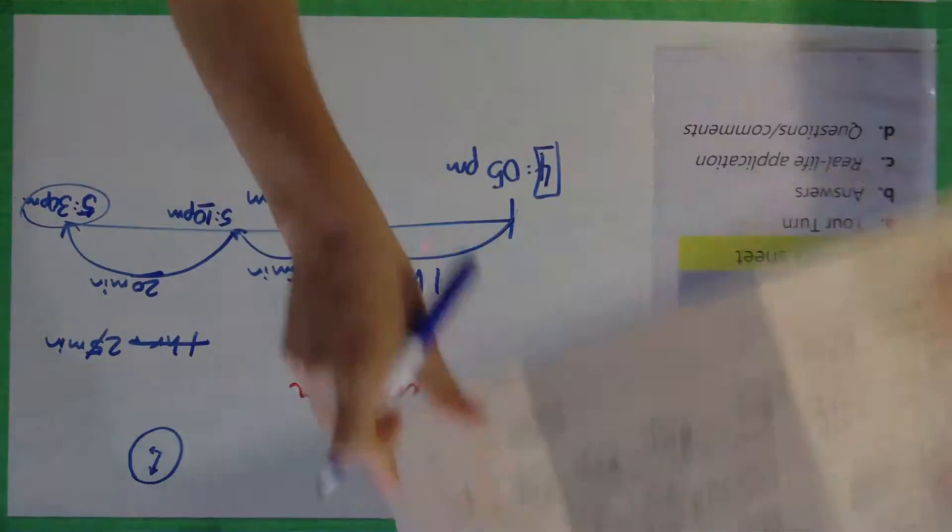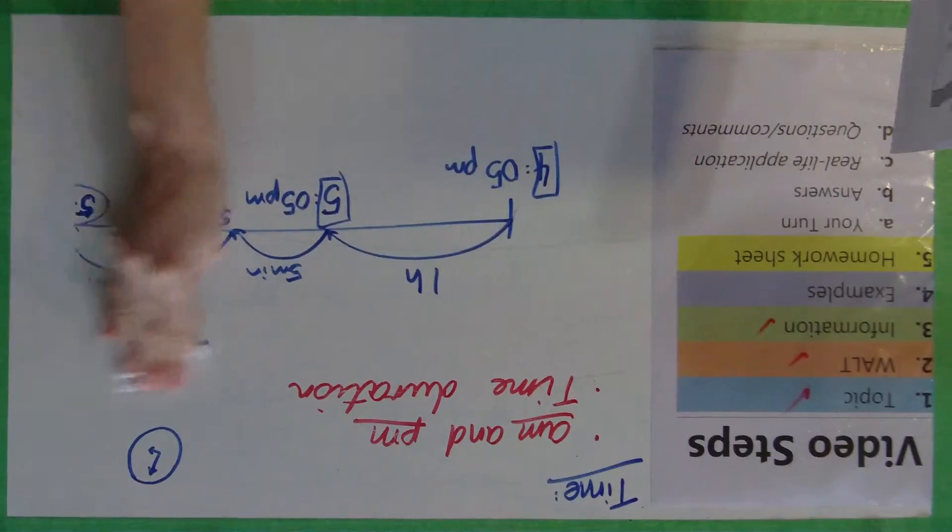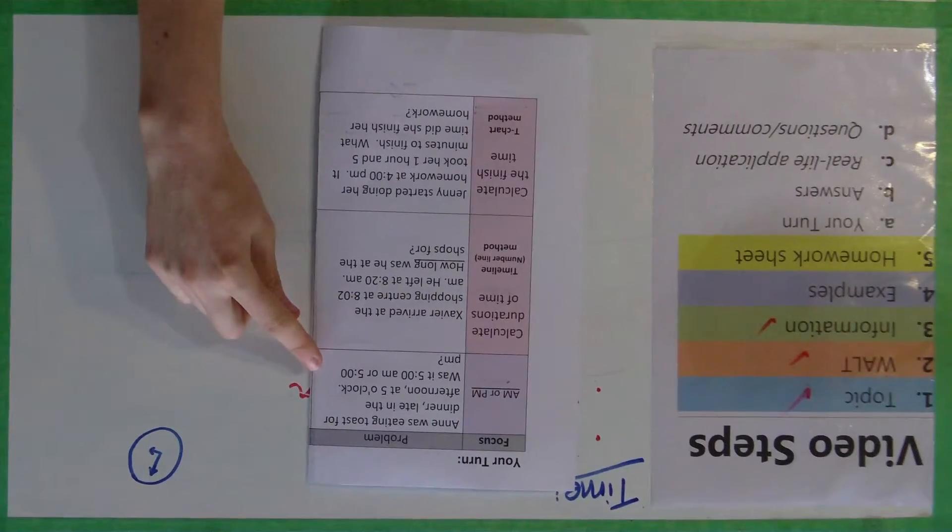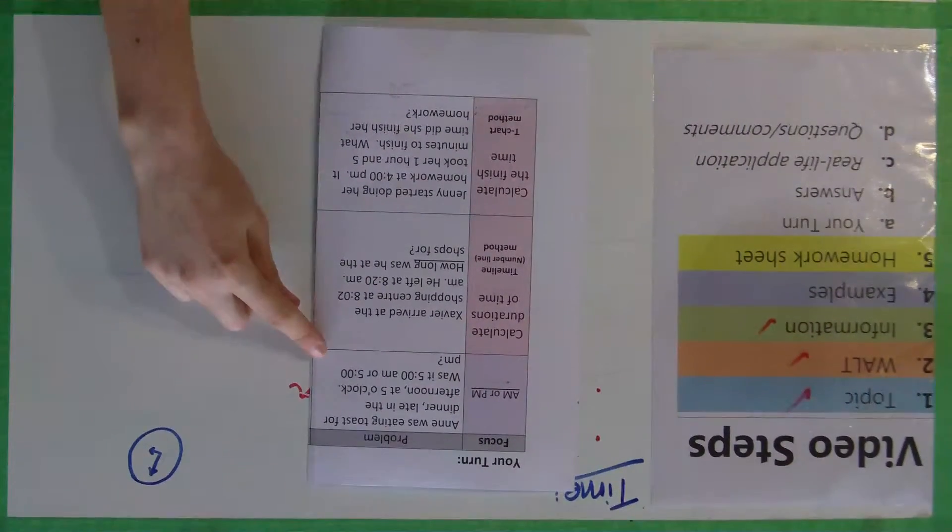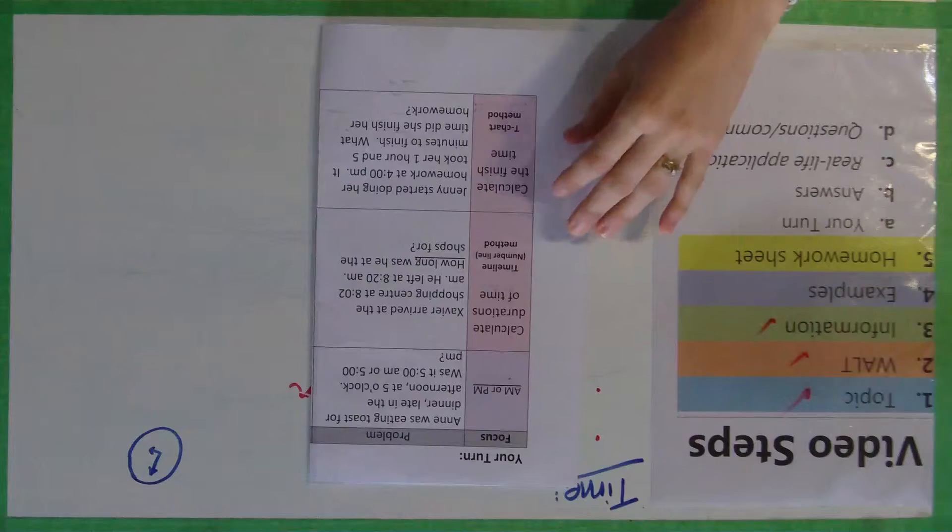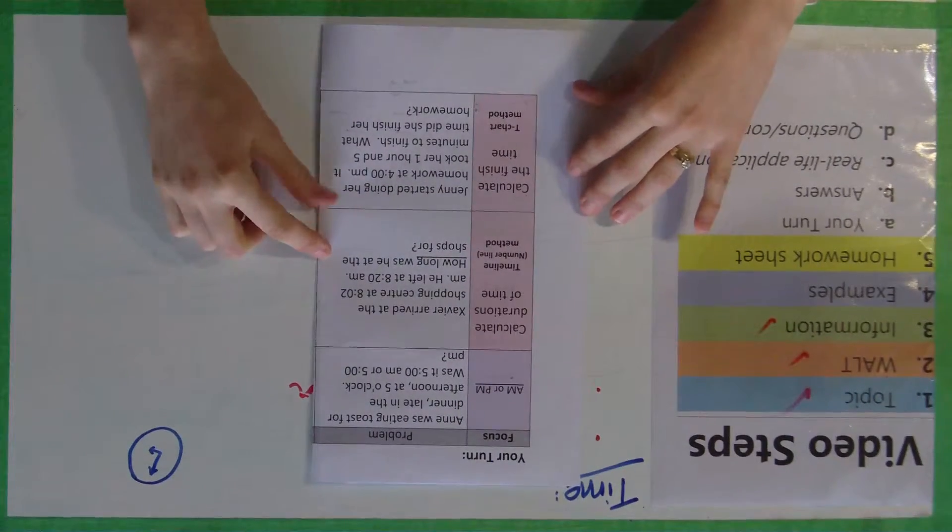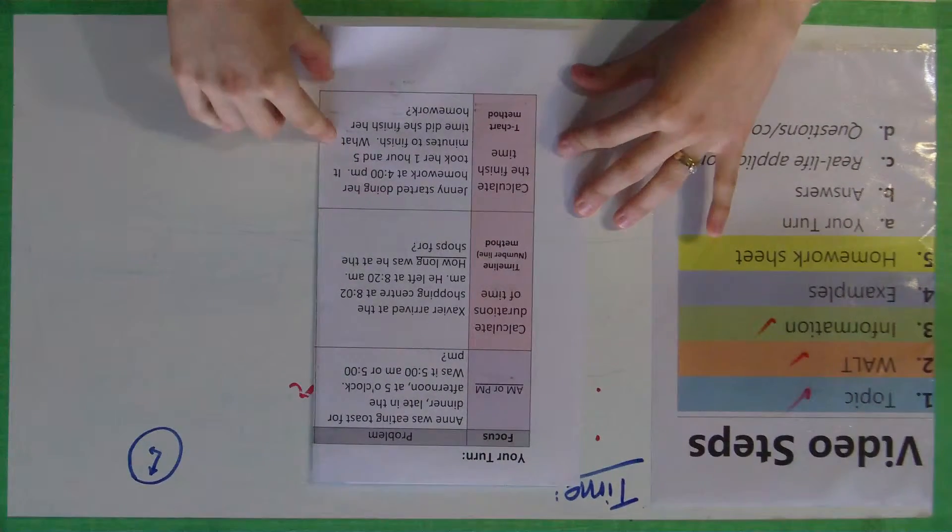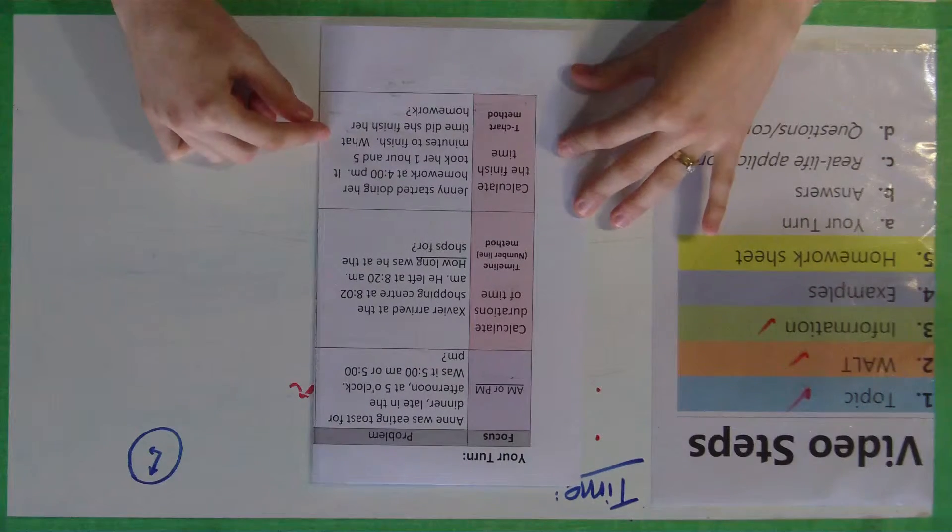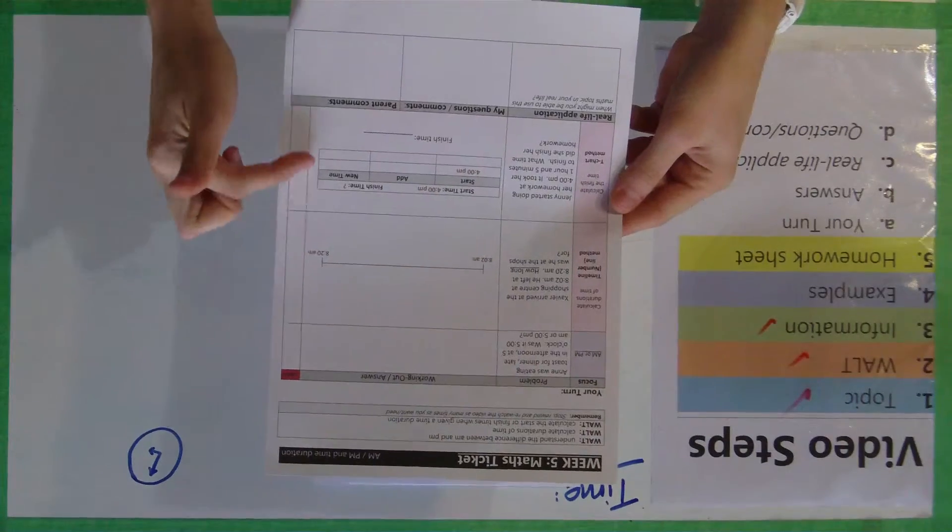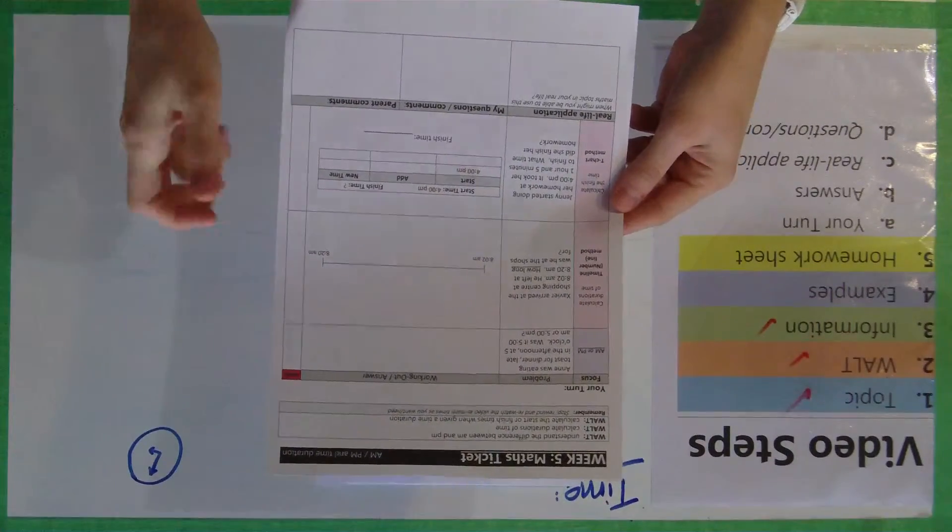So now you've got some examples, questions to work out on your own worksheet. Here they are. Ann was eating toast for dinner late in the afternoon at 5 o'clock. Was it 5 a.m. or 5 p.m.? This one here is about using the timeline method here. Xavier arrived at the shopping centre at 8:02 a.m. He left at 8:20 a.m. How long was he at the shops for? Jenny started doing her homework at 4 p.m. It took her one hour and five minutes to finish. What time did she finish her homework? So please pause the video now and have a go at working out these questions on your homework sheet. I've actually already set up your homework sheet to have the number line set up and also the table for you to make things a bit easier.